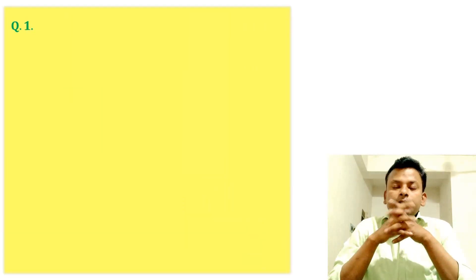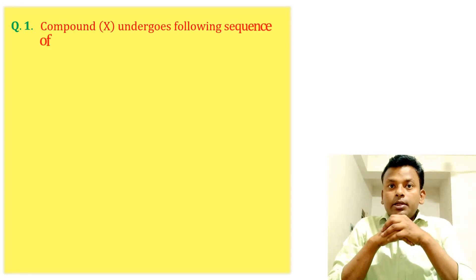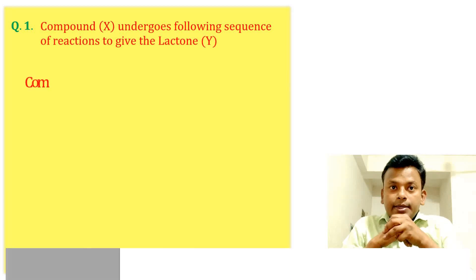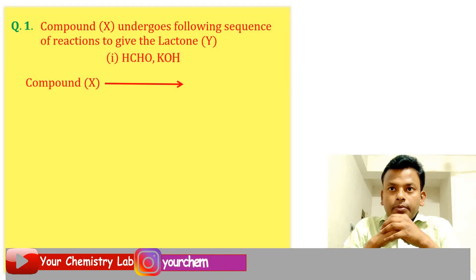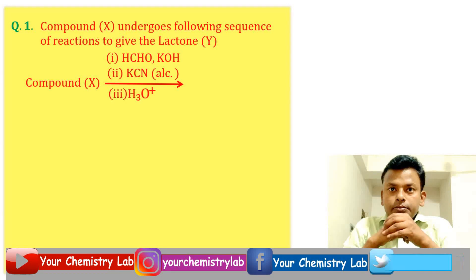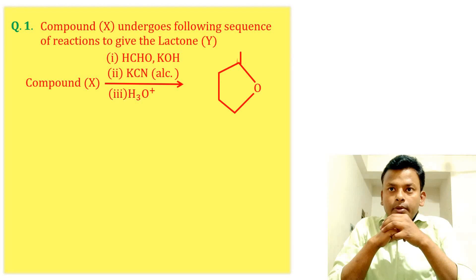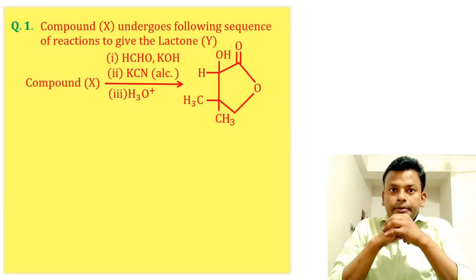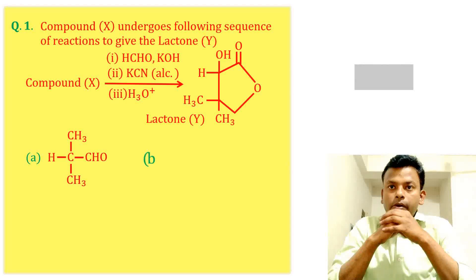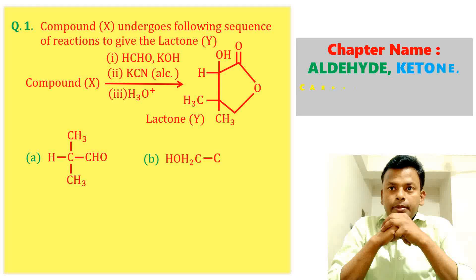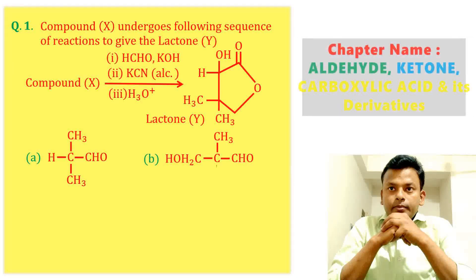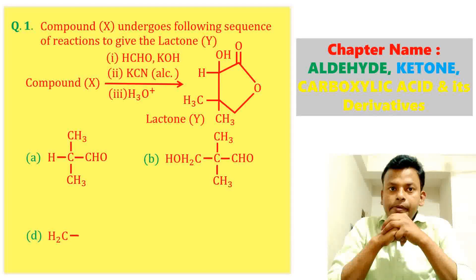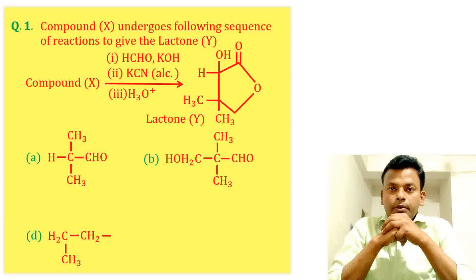Question 1: Compound X undergoes the following sequence of reactions to give the electron Y. Compound X is shown, and this is electron Y. The options are: Option A, Option B, Option C, and Option D.